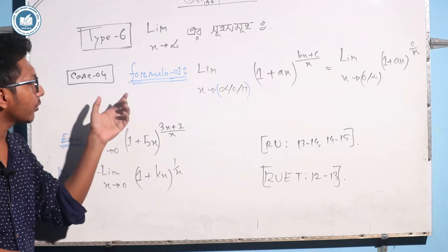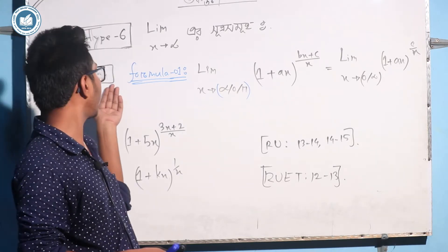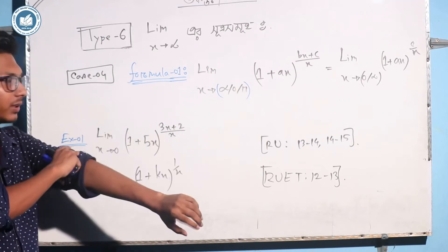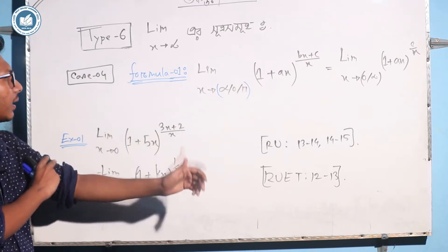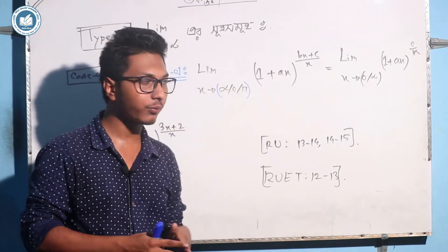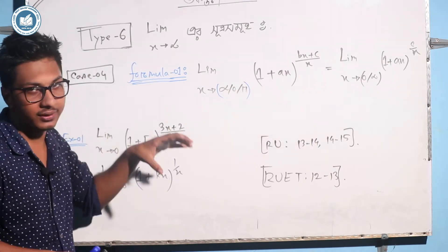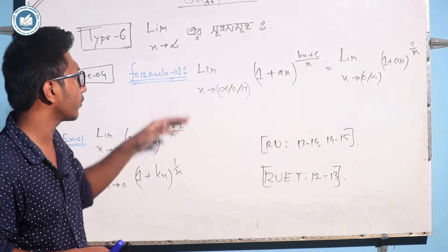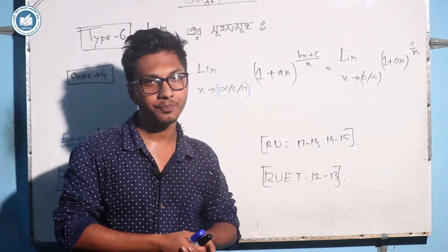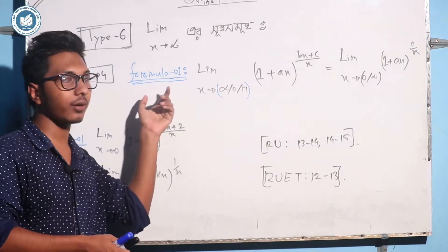Case 4 is a very important formula. Case 4 is another formula. We have one formula — this formula is the next formula. Case 4 is the last formula. This is part 1, this is the last formula.